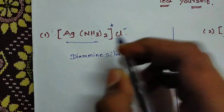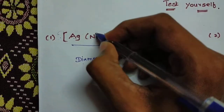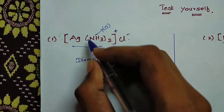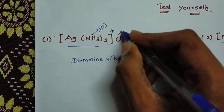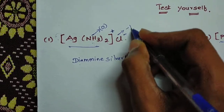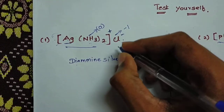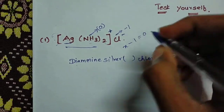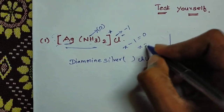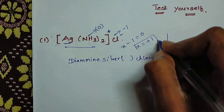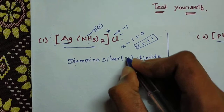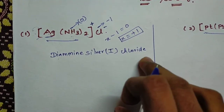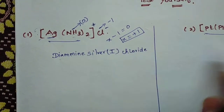Now we need the oxidation number. Amine is a neutral ligand, so its oxidation state is 0. Chlorine's oxidation state is minus 1. So for silver: x + (minus 1) = 0, therefore x = plus 1. So the name is diamminesilver(I) chloride.